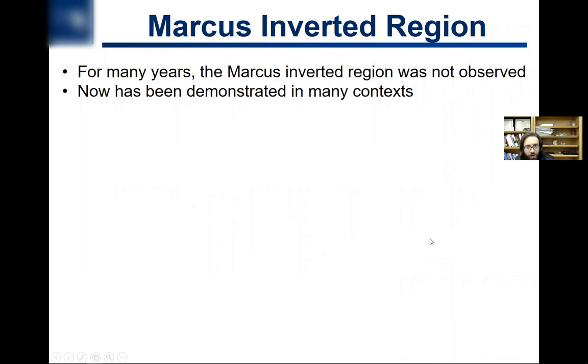So for many years, the Marcus inverted region was not observed, and when Marcus first published this, it received a lot of skepticism, as you might imagine, because it just doesn't make intuitive sense. And nobody had ever observed this sort of reaction where you push it harder and it goes slower. Marcus was pretty steadfast in this and said, no, you know, this all checks out. It makes sense. We maybe haven't been able to push reactions hard enough to observe this yet, but it checks out. It turns out now it's been demonstrated in a lot of contexts. It's been demonstrated electrochemically, it's been demonstrated photochemically, and in systems that don't necessarily have complexes at all, like in surfaces with metal atoms.